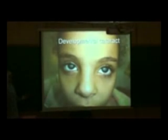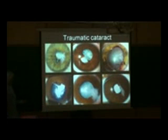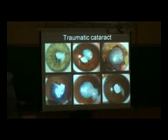The developmental cataract is the cataract that appears after the age of two years. The traumatic cataract, as you see in these photos, is cataract caused by trauma. It may be associated with other ocular abnormalities. You can see there is blood in the anterior chamber, and you see here the corneal scars associated with the traumatic cataract.